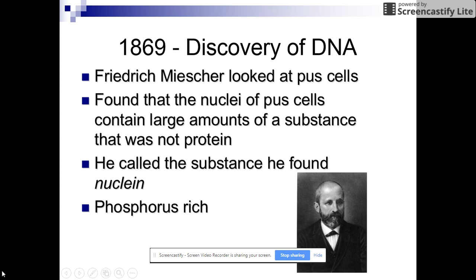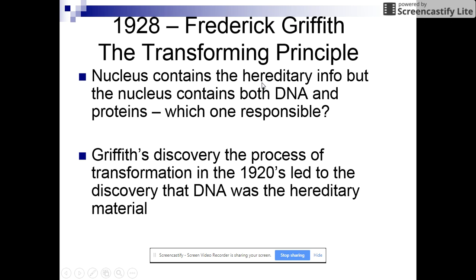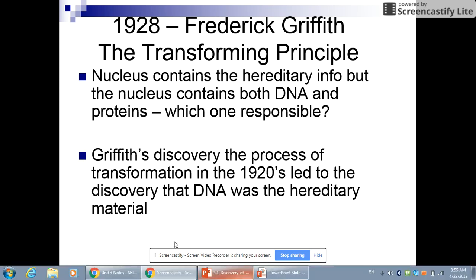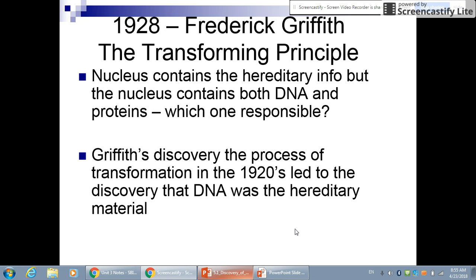I'm going to skip ahead to where they first start talking about transformation. This is with Griffith. At this point, they knew that the nucleus contained the hereditary material — a molecule that was phosphorus-rich, the DNA molecule — and they knew the nucleus also had proteins, but they didn't know which one was the hereditary material. He did a series of experiments that led to the discovery that DNA was the hereditary material, so he was really the first one to start to identify DNA as the hereditary material.